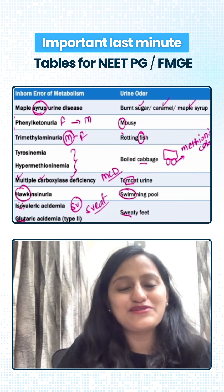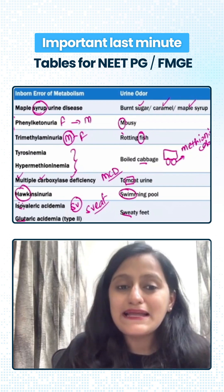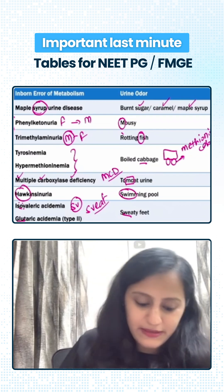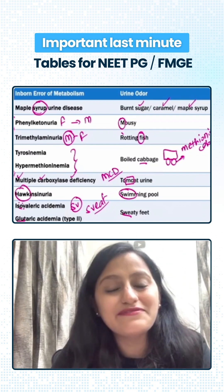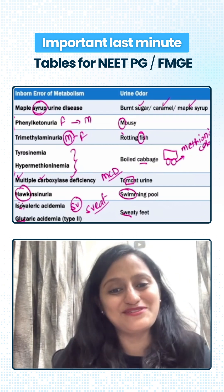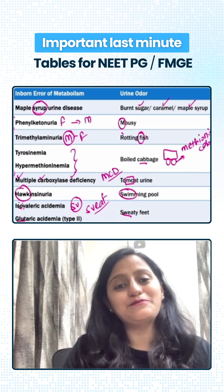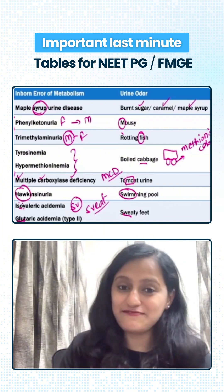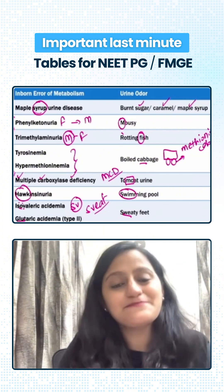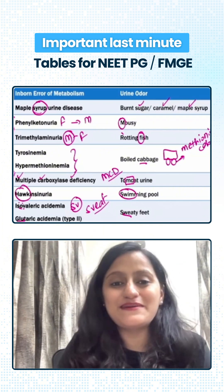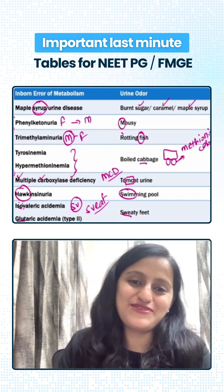So those are the various tricks to remember the urine odors. Let me know in the comments what vitamin supplementation you would give in multiple carboxylase deficiency. Those were the quick tricks for today — I hope you liked it. If yes, do not forget to share this video with your friends and download the MedSynapse app by Dr. Nikita for more such tips and tricks. Thank you.